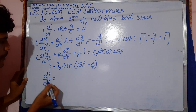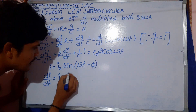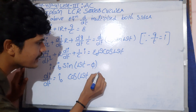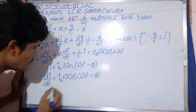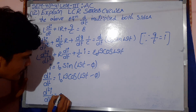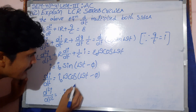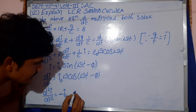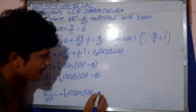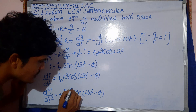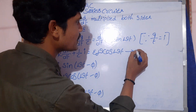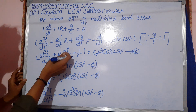dI/dt: the derivative of I₀ sin(ωt - φ) means I₀ ω cos(ωt - φ). The double derivative d²I/dt² equals minus I₀ sin(ωt - φ) into omega, so omega into omega equals omega squared. This is equation number 2. You will substitute this in the above equation.